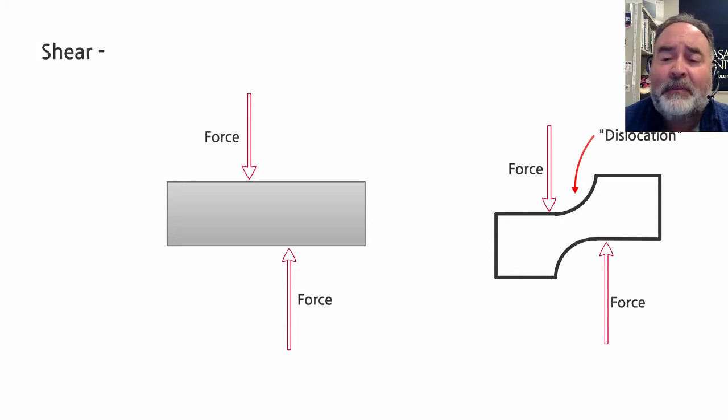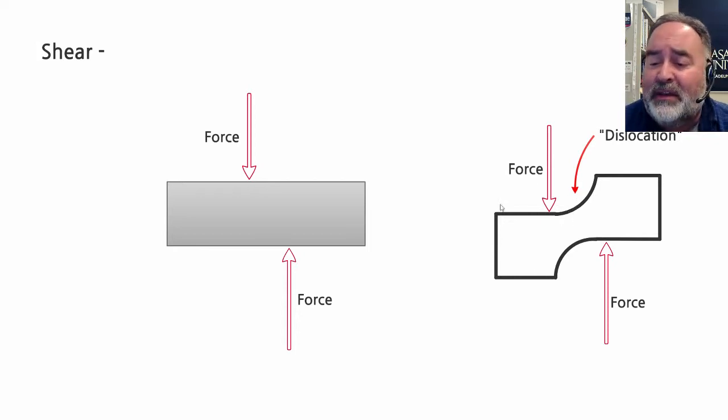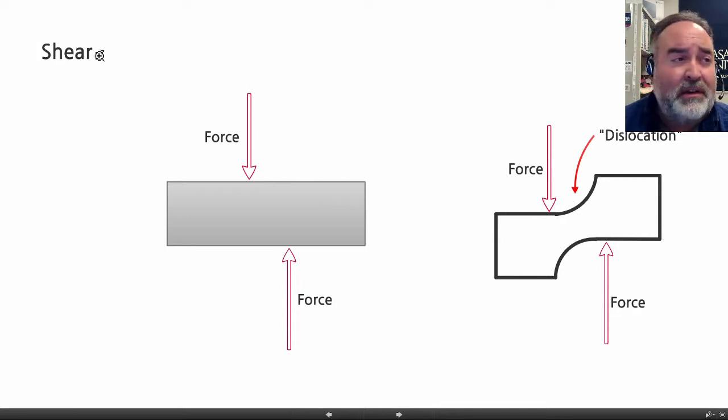Dislocation is where the material on this side is moving up, the material on this side is moving down, and you're moving the material past each other. The right side moves up, the left side moves down, and eventually you tear or you cut - the big term being you shear the material. This is what happens to your hair when you cut your hair with a pair of shears.